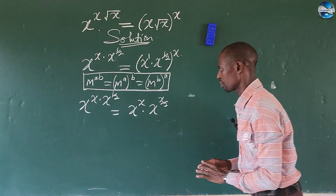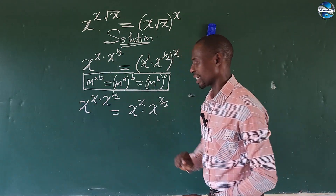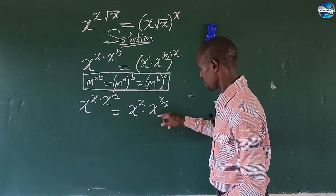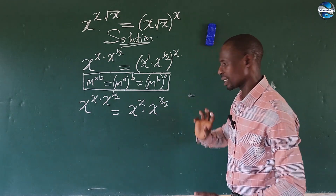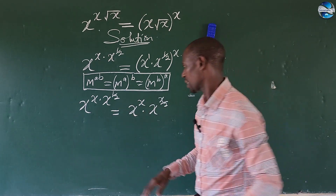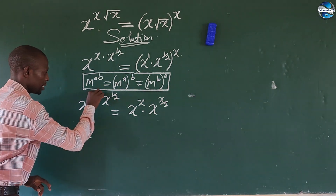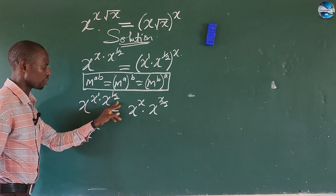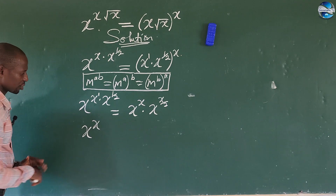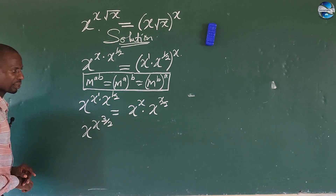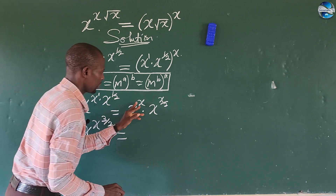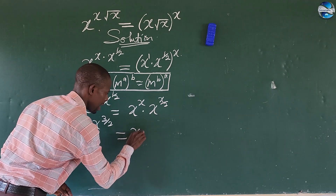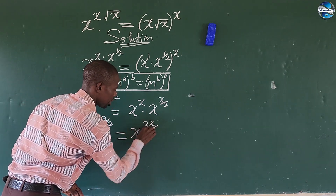So what we do now: this is multiplication, the bases are the same but the exponents are different. Here we have a visible 1. The bases are the same and exponents are different, so we can add the exponents. Same thing on the right side. So this gives us x to the power of 1 plus 1 over 2, which gives us 3 over 2. So we have x to the power of 3 over 2. On the right side, adding x plus x over 2 gives us 3x over 2. So we have x to the power of 3x over 2.